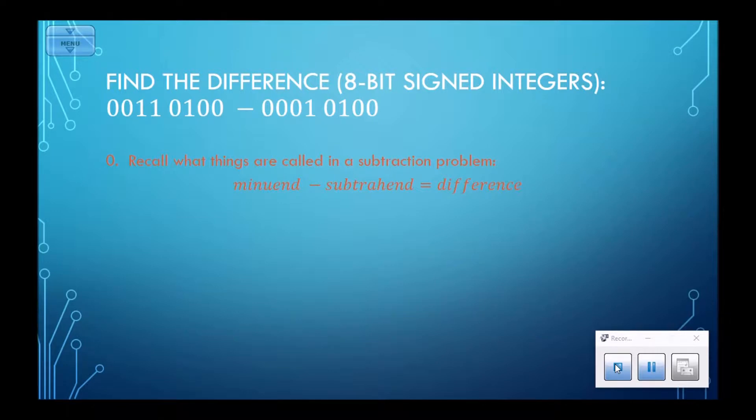Remember this is minuend minus subtrahend. That means my minuend is 0011 0100. Notice this is a positive number. The sign bit here is a 0, so that's a positive number.